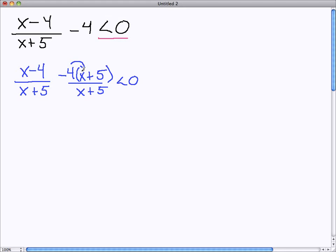And that's going to involve some distributing, which will then give me on the top of my fraction, x-4, minus 4x, minus 20, all over x+5. And that's still all going to be less than zero.